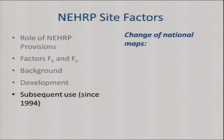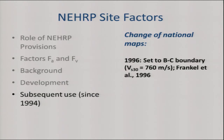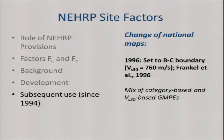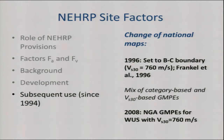Over time, the national maps changed. In 1996, the USGS changed the definition of the reference velocity to a well-defined condition — the BC boundary — which is 760 m/s. The GMPEs weren't completely up to the task yet; most were category-based rock/soil, though Boore had one that was VS30-based and that was used. The most recent maps for the western US use NGA with a defined VS30 of 760 m/s. But the site factors never changed — the maps went from hard rock to 760, while the factors stayed anchored to 1,050.